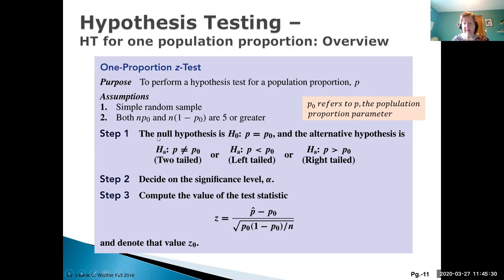We have our null hypothesis, and remember the null always contains the population parameter. P-naught is the currently accepted value. The alternative hypothesis will be one of three tests: the not-equal-to test (two-tail), the less-than test (left-tail), or the greater-than test (right-tail). Notice that each test contains the population parameter and the currently accepted value, as does the null hypothesis.